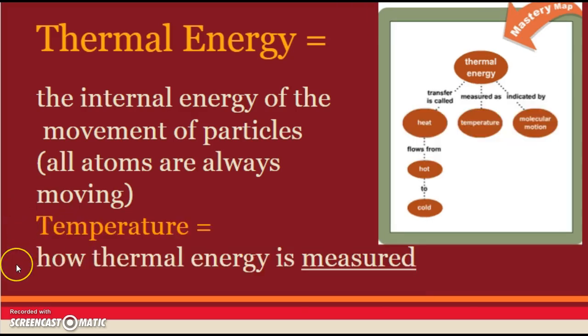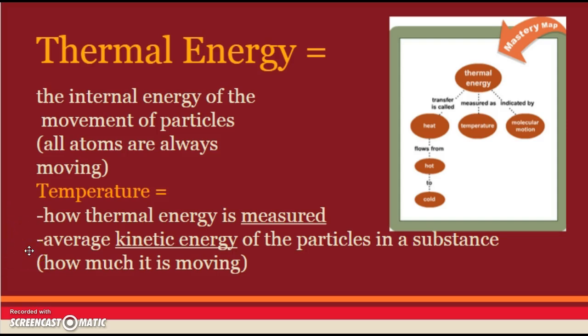Temperature is how thermal energy is measured — notice I underline the word 'measured.' Because temperature and heat are words we use in everyday language, and they have very specific and different definitions in chemistry, it's easy to get confused. In chemistry class, temperature means how I'm measuring the thermal energy — how fast or slow the atoms are moving. Temperature is the average kinetic energy of the particles in a substance.